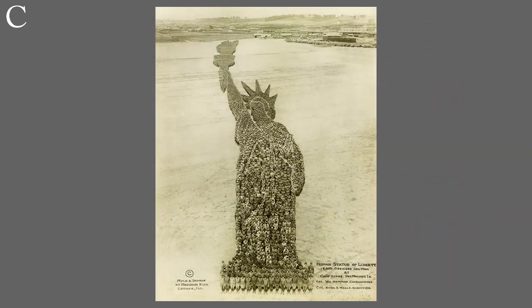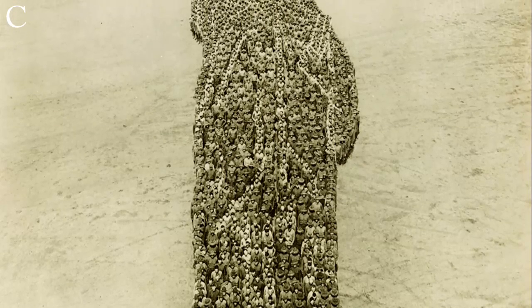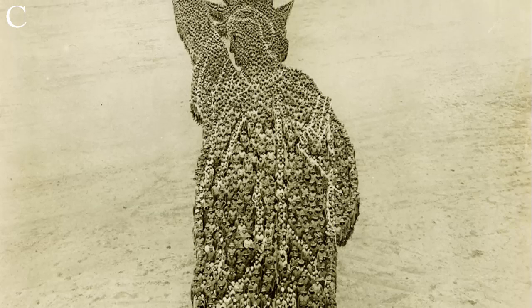The arrangements compensated for diminishing perspective by increasing the size of the pattern with an exact proportional expansion. This required precise guidelines being laid out on the ground with ropes so the troops could see where they should stand.